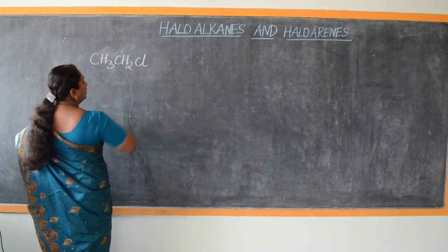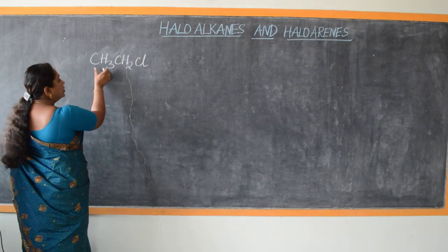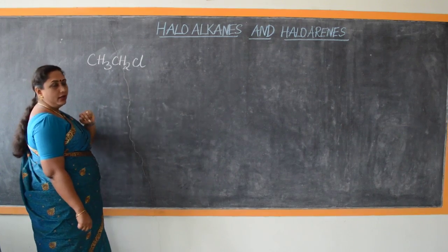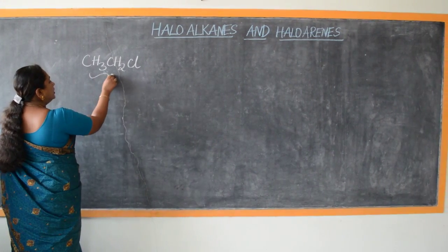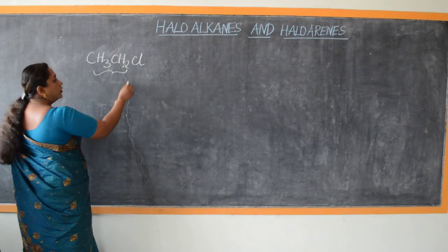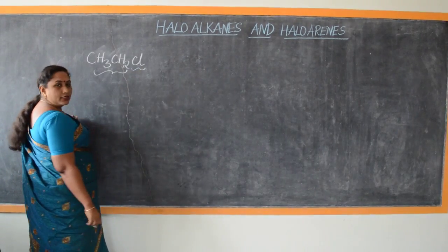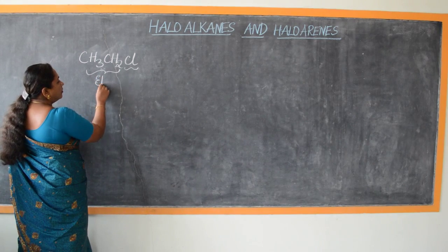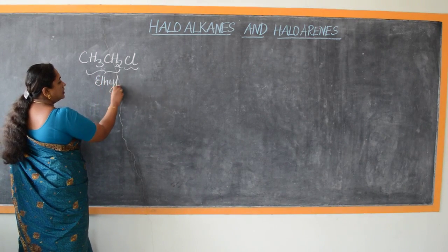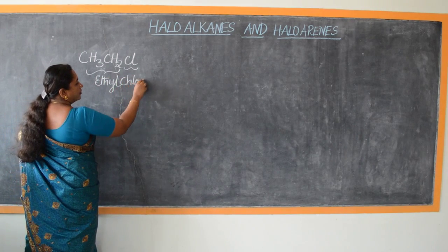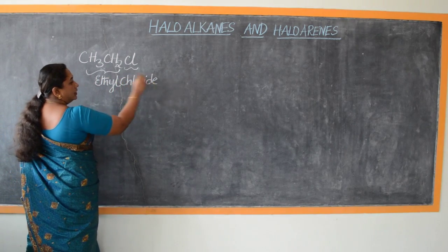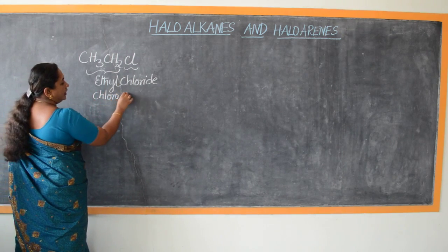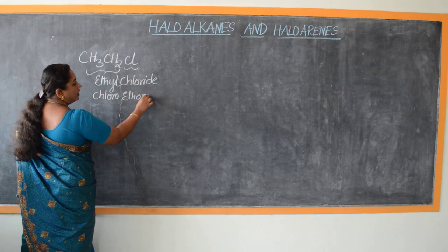Here I have a compound whose formula is CH3-CH2-Cl. CH3-CH2 is the ethyl group, to which Cl is attached. Therefore, the trivial nomenclature of this compound is ethyl chloride, whereas its IUPAC name is chloroethane.